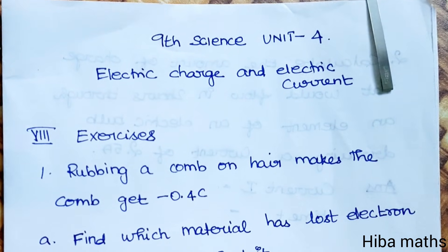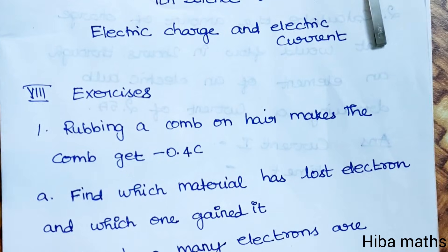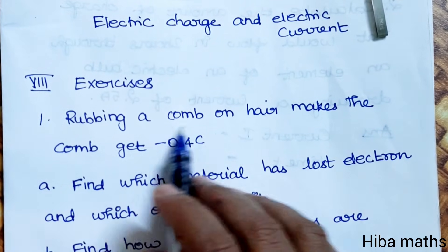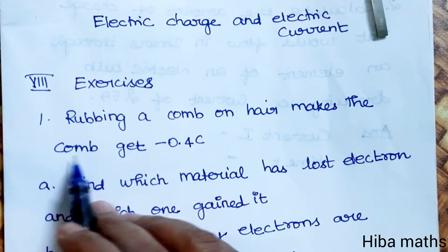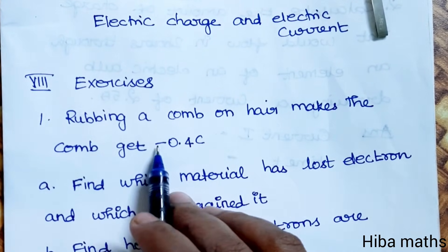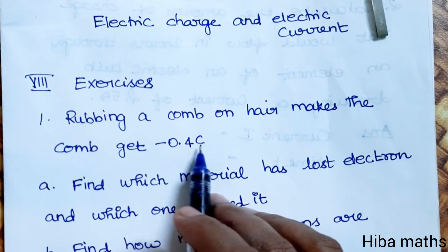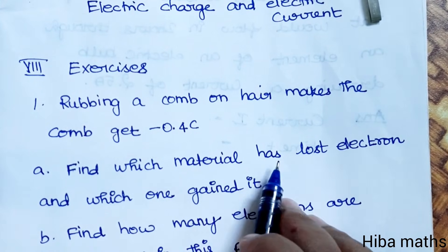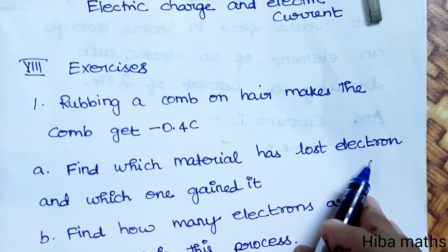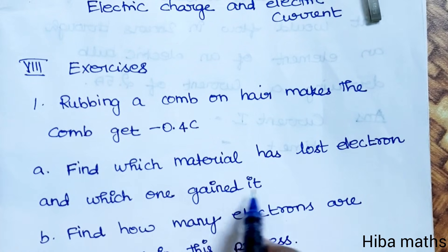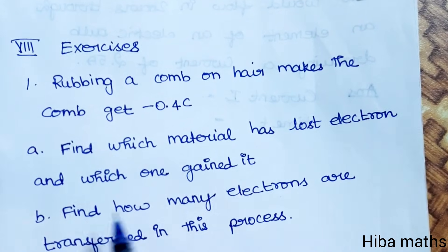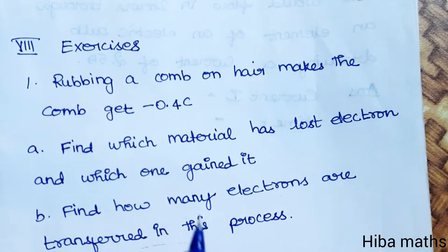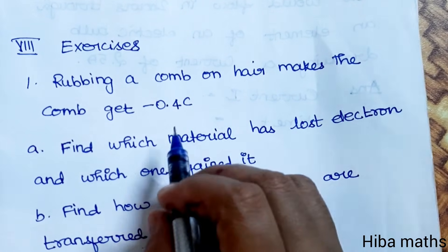Exercise first question: Rubbing a comb on hair makes the comb get minus 0.4 C. Find which material has lost electrons and which one gained them. Also find how many electrons were transferred in this process.